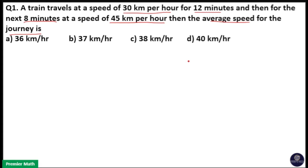So here we have to find the average speed for the entire journey. And average speed is equal to total distance divided by total time.